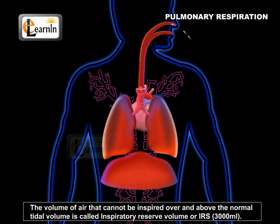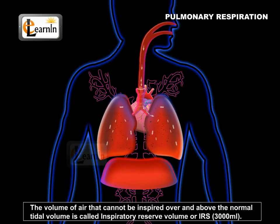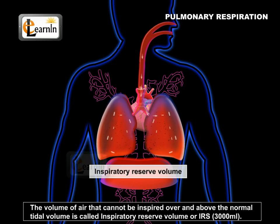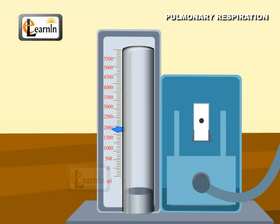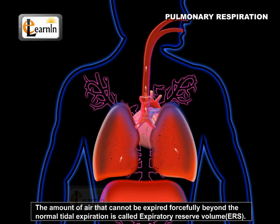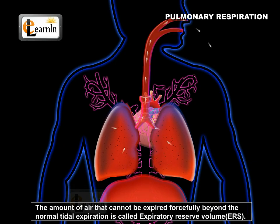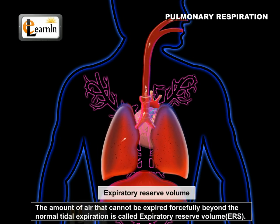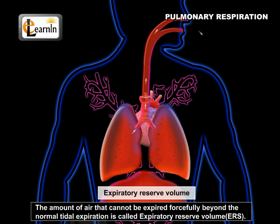The volume of air that cannot be inspired over and above the normal tidal volume is called inspiratory reserve volume, or IRV, which is 3,000 mL. The amount of air that cannot be expired forcefully beyond the normal tidal expiration is called expiratory reserve volume. It is approximately 1,100 mL.